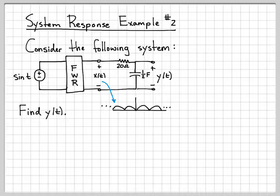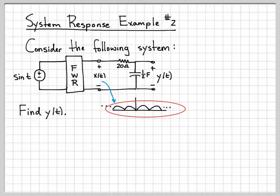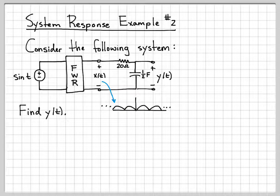After it goes through the full wave rectifier, x(t) looks like a signal like this. All of the negative parts of the sinusoid have been flipped up to be positive, so it looks like a signal like this.